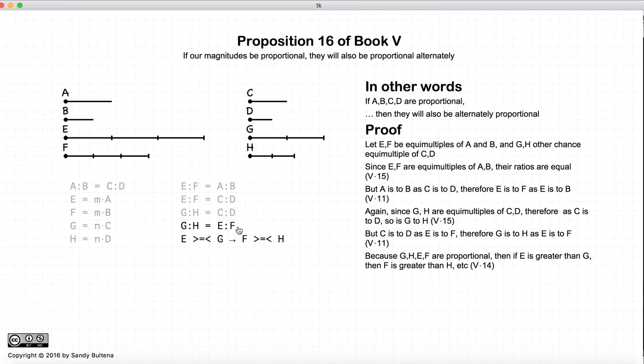Now according to proposition 14, if we have two ratios that are equal, this implies that if G is greater than E, then H would be greater than F. If G was equal to E, H would be equal to F. If G was less than E, H would be less than F. Or in other words, it would satisfy this equation. That comes from proposition 14.